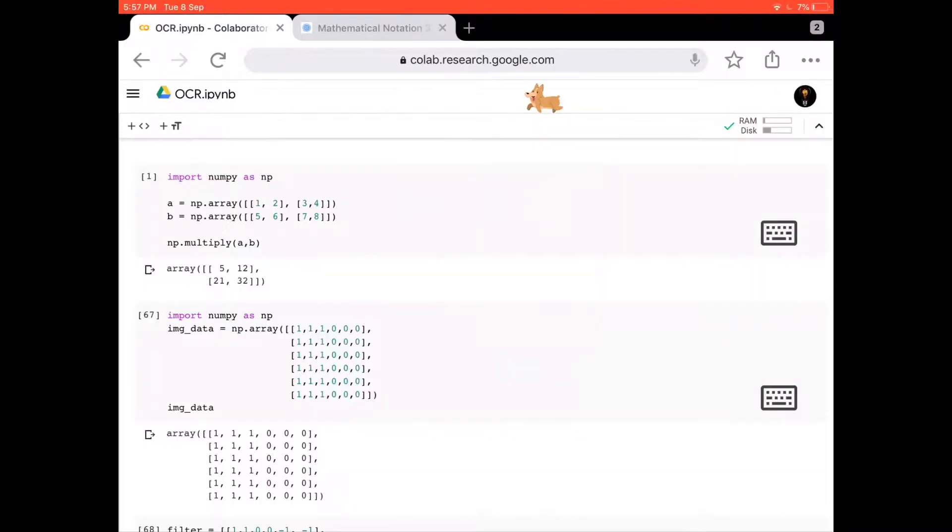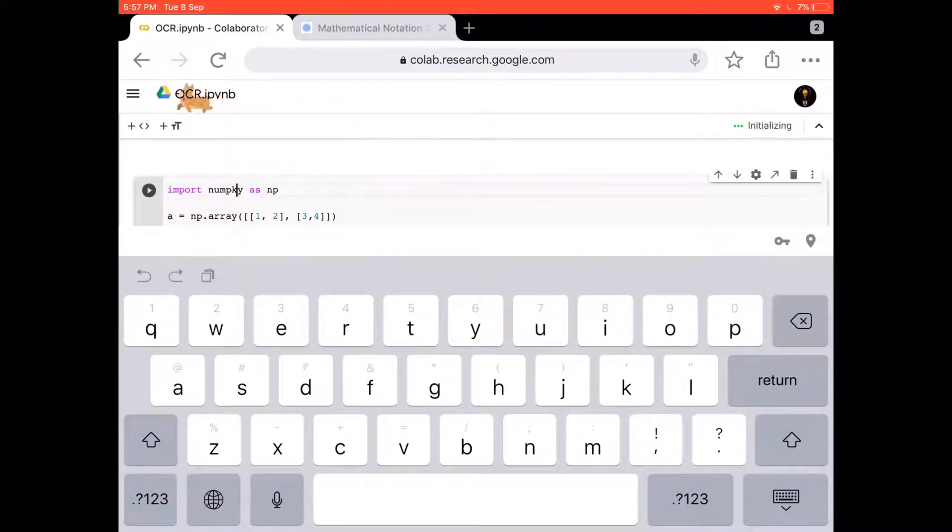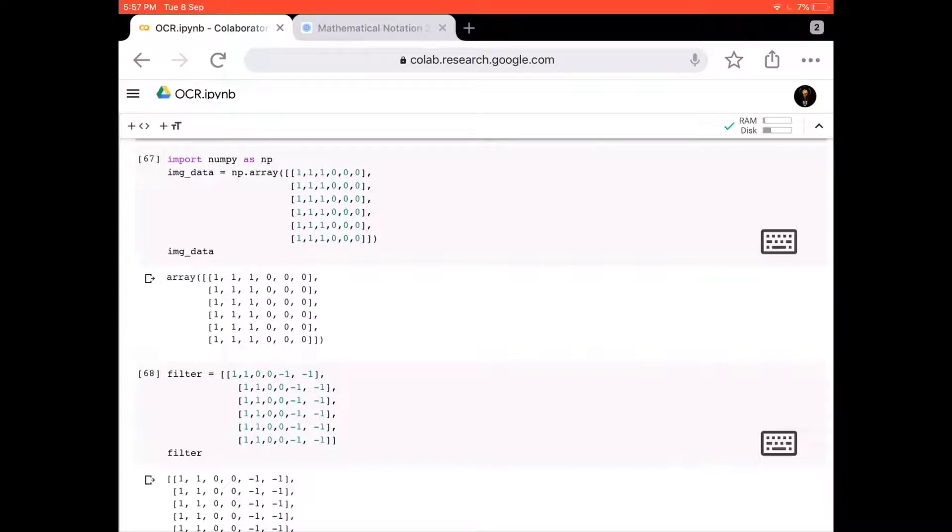Let me move to my Google Colab. You can see I took an image data where I put the first three columns in this matrix as one and the next three columns as zero, and repeated it six times. This gives me a 6 by 6 image or matrix. If I print it out, it looks like this. Let's consider this as matrix A.